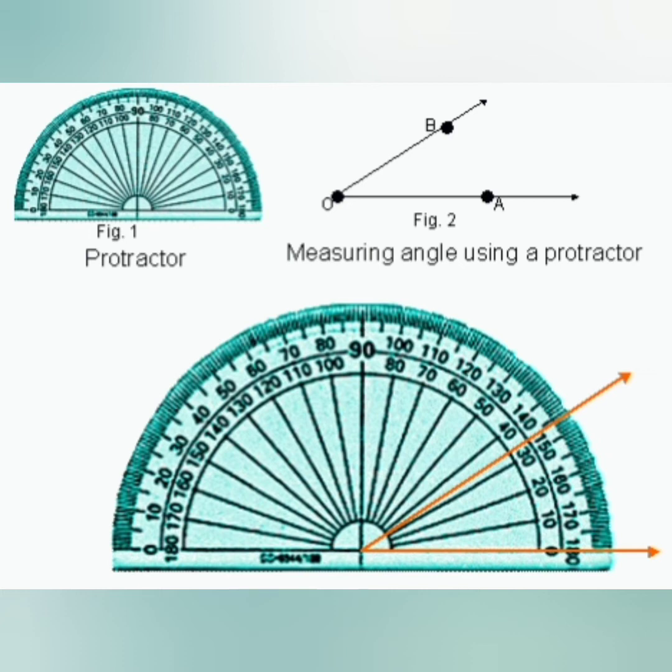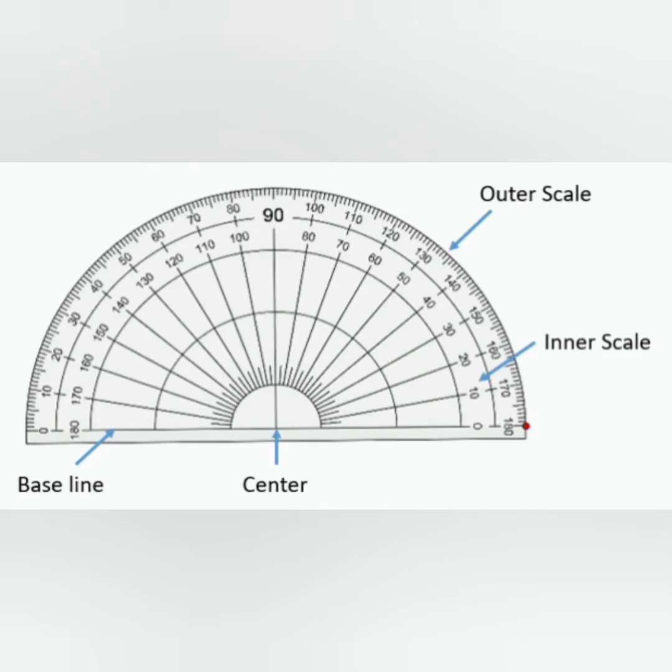This is the protractor. A protractor has two sets of measurements written on it. They are called scales. There is inner scale and outer scale both having measurements from 0 to 180 degrees in different directions. There is a baseline and the midpoint of the baseline is called the center.